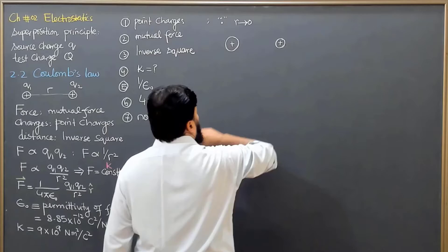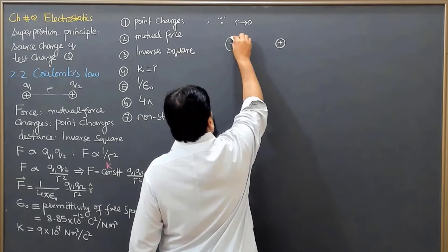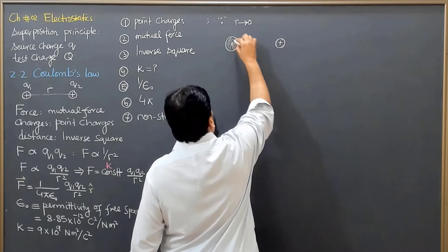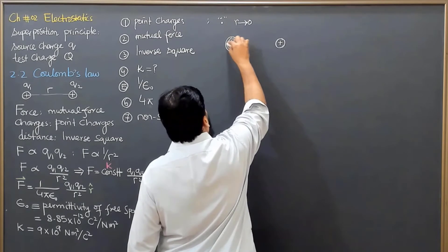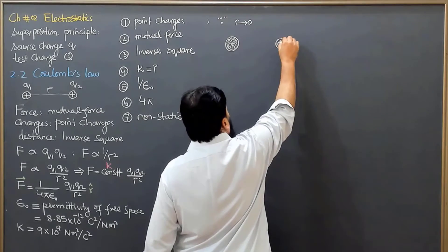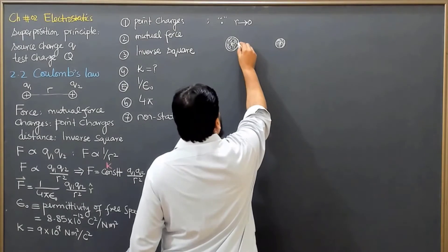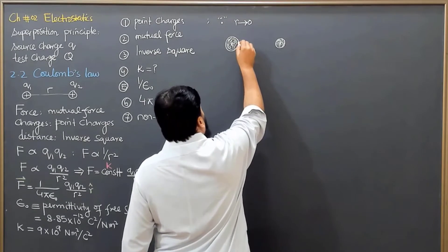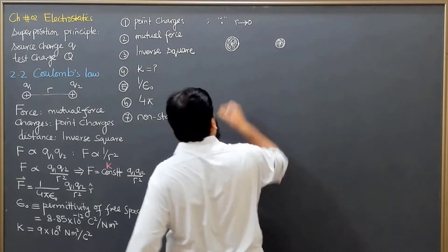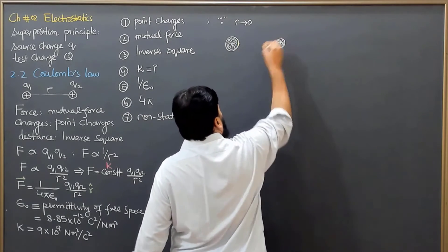As we know, the charge is distributed all over the mass, all over the body. The charge is distributed. So what we will see here is that if the charge is here at this point, if the charge is at this point and it is interacting with this point, then the internal distance between these two is this much.